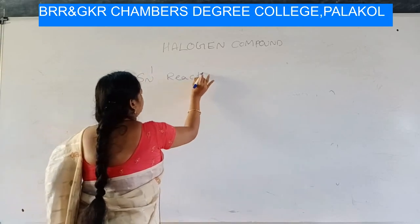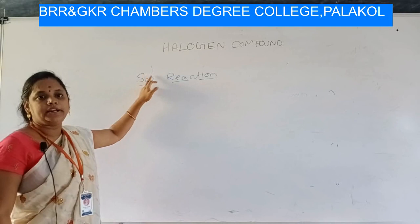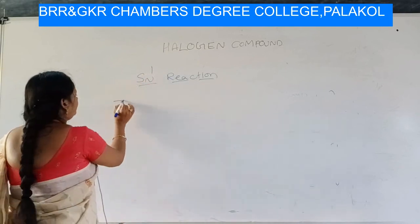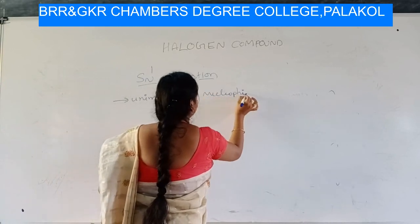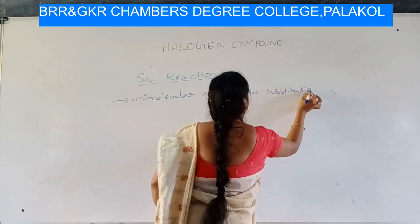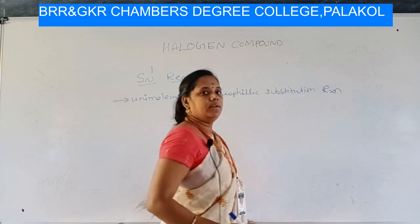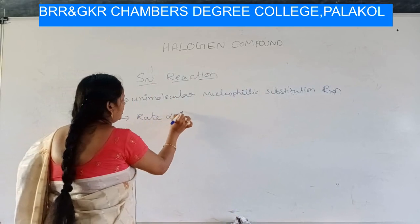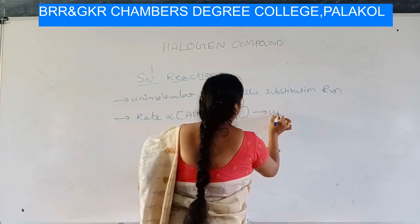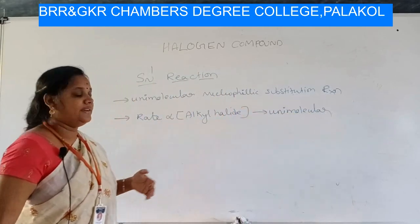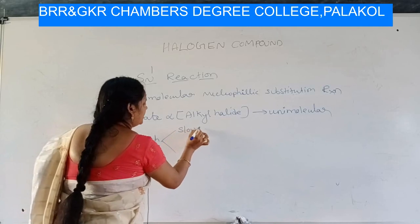SN1 — unimolecular nucleophilic substitution reaction. The rate of the reaction depends only on the concentration of alkyl halide; hence it is called unimolecular. In this SN1 reaction, the mechanism takes place in two steps: a slow step and a fast step.